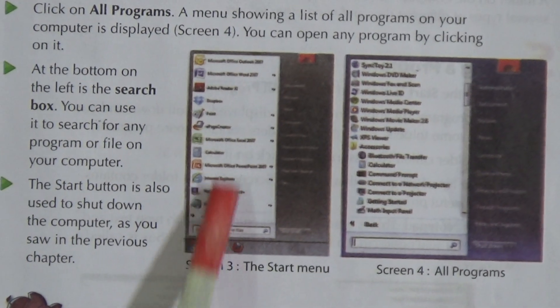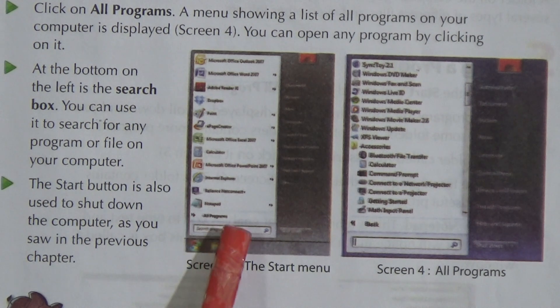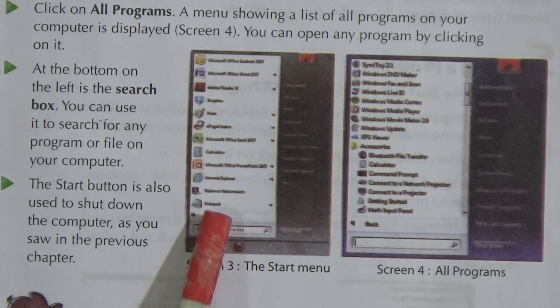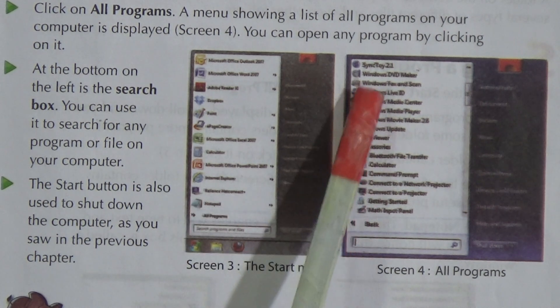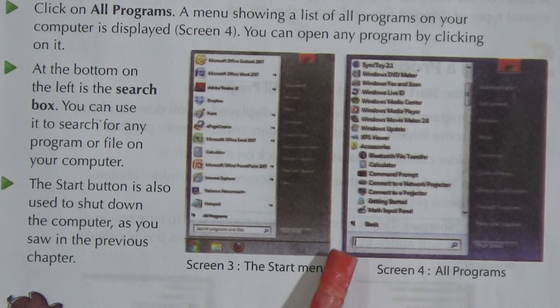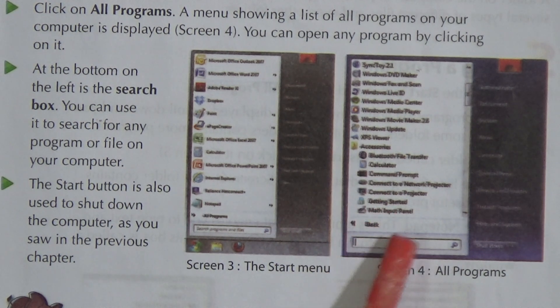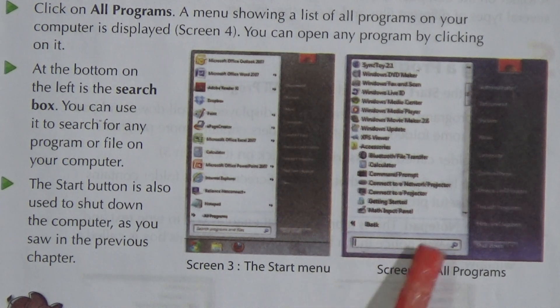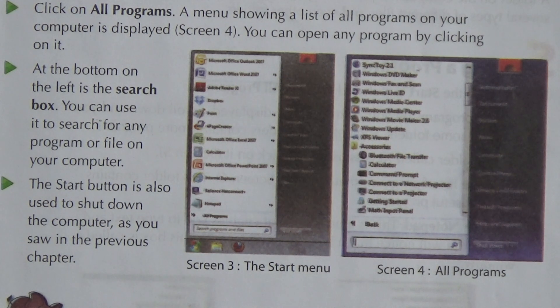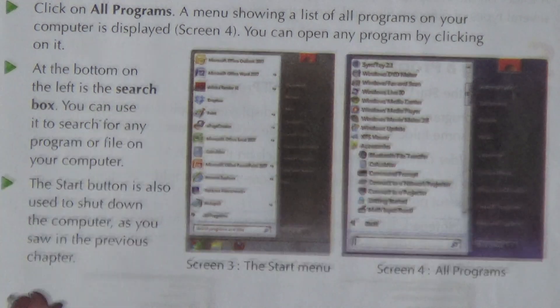The start menu appears when you click on it, showing the most recent programs. If you click on 'All Programs,' you can see a list of all programs, and there is a search bar below that you can use for searching files or programs. That was today's lesson — I hope you read it again at home. See you in the next class!